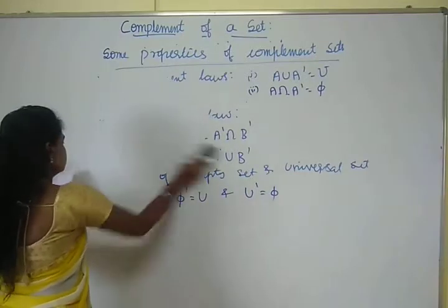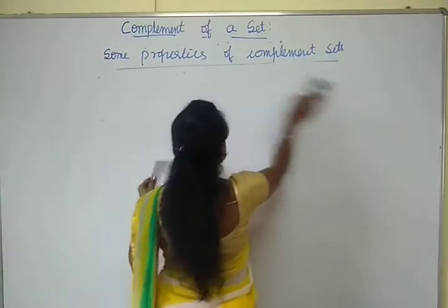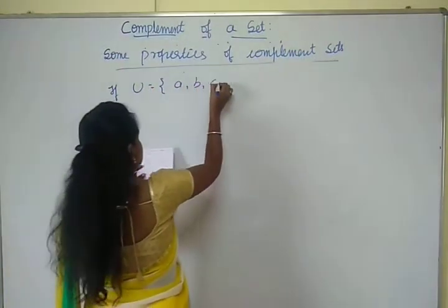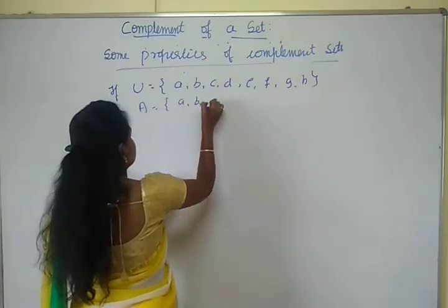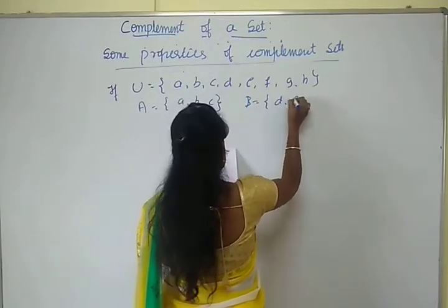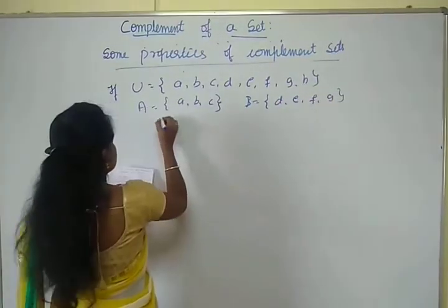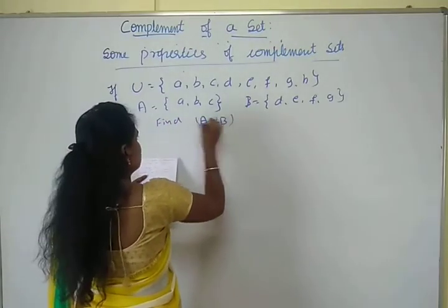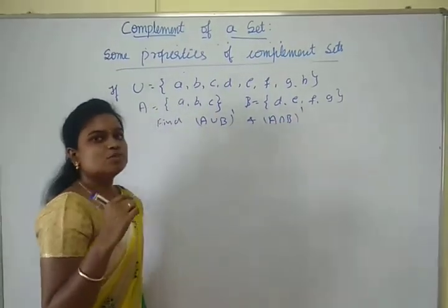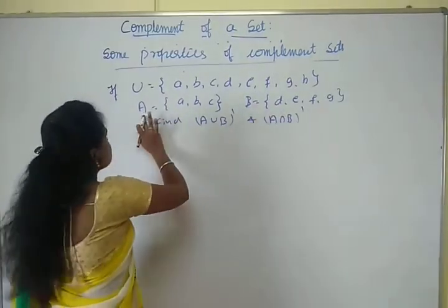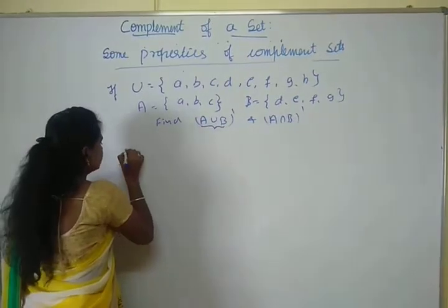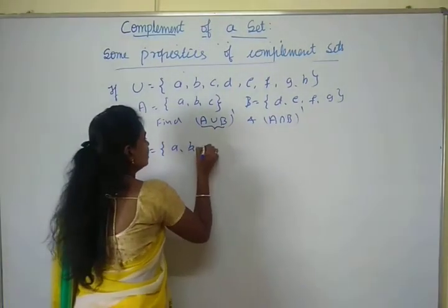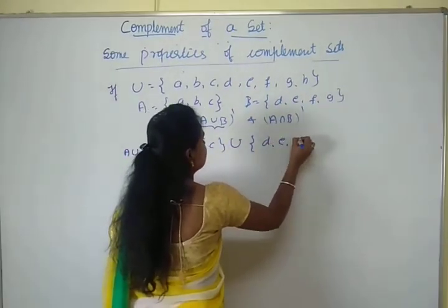Next problem. If U = {A, B, C, D, E, F, G, H} and set A = {A, B, C} and B = {D, E, F, G}, then find A union B whole dash and A intersection B whole dash. First, find A union B. A is {A, B, C} union B is {D, E, F, G}.